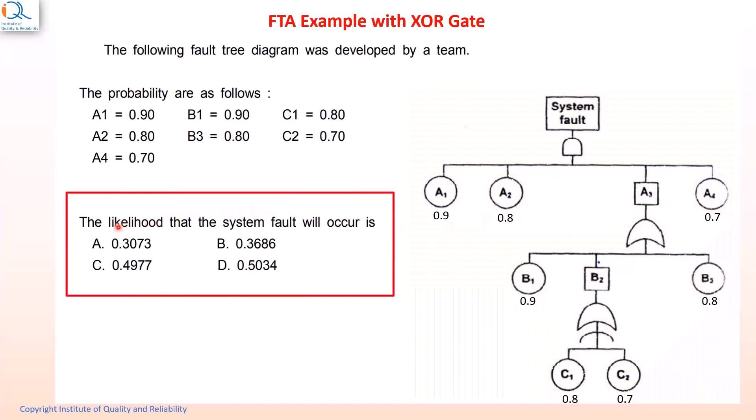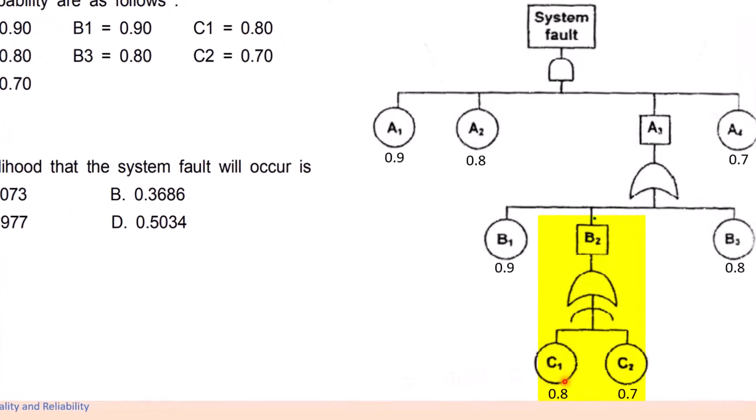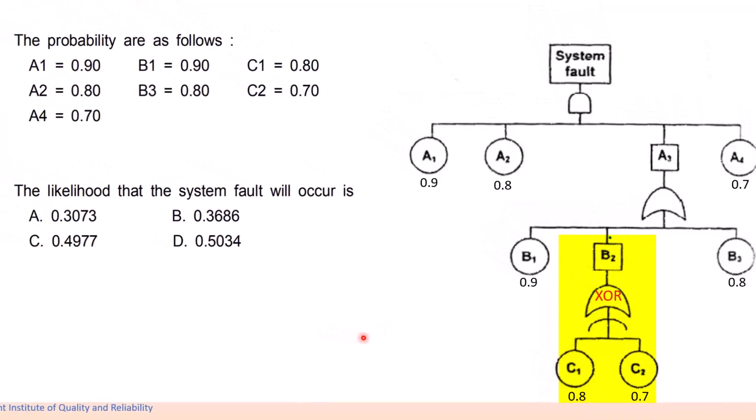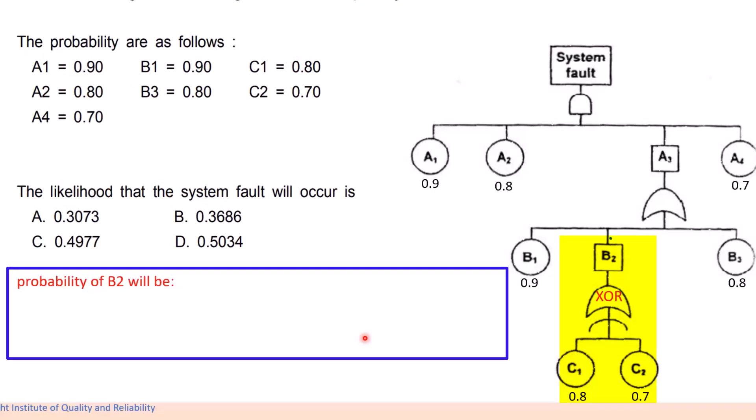We have to find out what is the likelihood that a system fault will occur for the top level event system fault. There are four options A, B, C and D and we have to find out which is the correct one. We will start with the XOR gate wherein the inputs are C1 and C2 and the output is B2. Probability of B2 will be given by C1 bar C2 plus C1 into C2 bar which can be stated as 0.2 into 0.7 plus 0.8 into 0.3 and which works out to be 0.38. Therefore, the probability of B2 is 0.38.